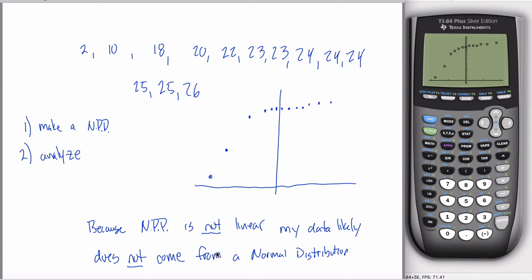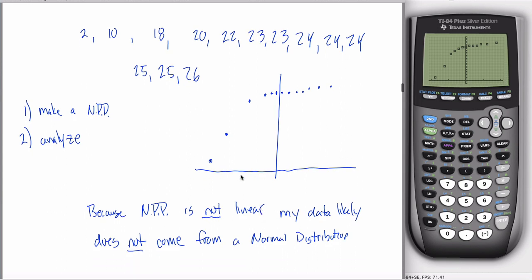And that's everything that I have on a normal probability plot. That's not true. That's the minimum you need to know about a normal probability plot. A couple more things I want to add, then I'll end the video.